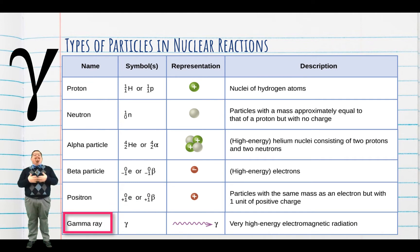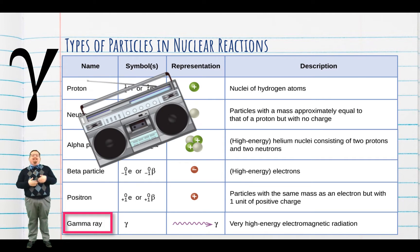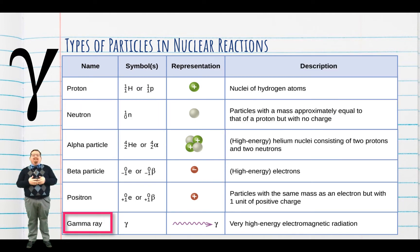Last but not least is the gamma ray. Gamma rays are just very high energy photons or light particles. Like any other type of electromagnetic radiation, radio waves, visible light, x-rays, etc., these photons travel in waves. Gamma rays have extremely short wavelengths and therefore very high energy.